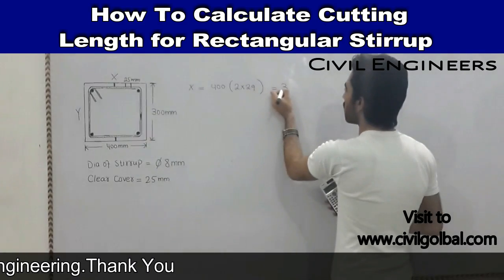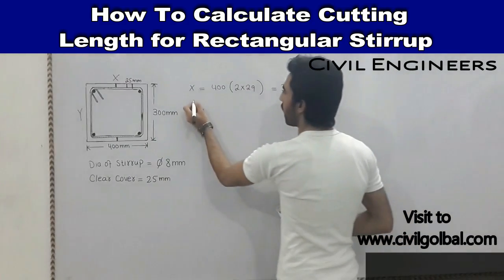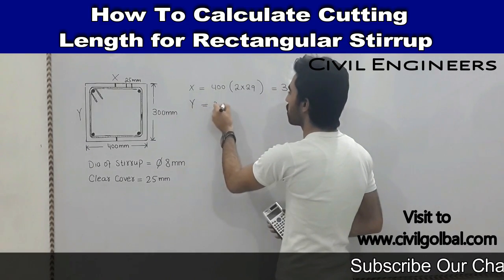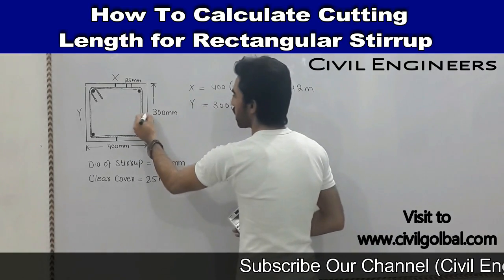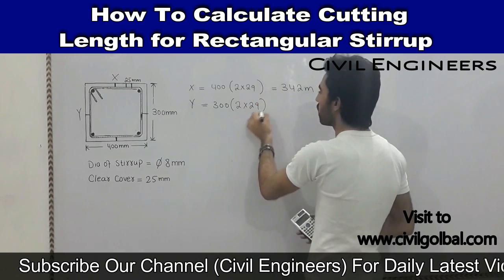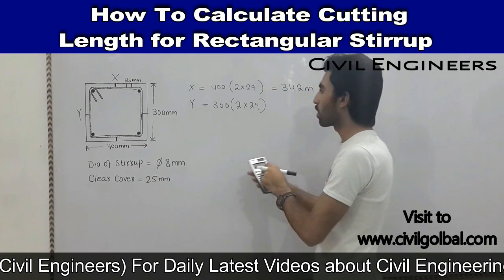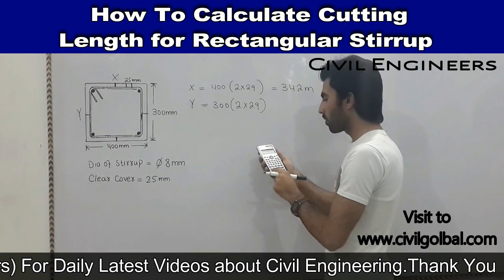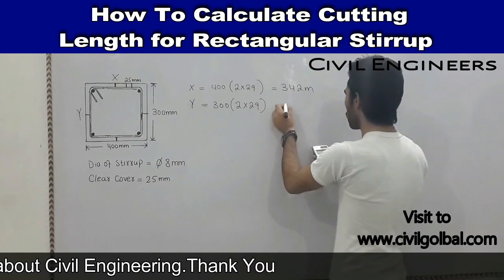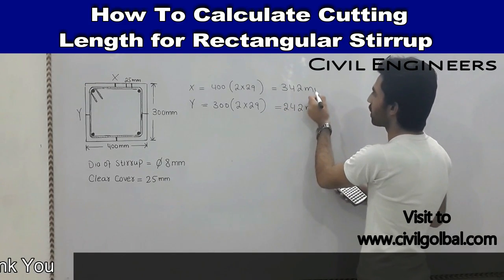Now I will find out the Y side, which is 300mm. Same like this — one side and the other side — so 2 multiply 29 again. We know 2 multiply 29 equals 58. So 300 subtract 58 gives us 242mm.